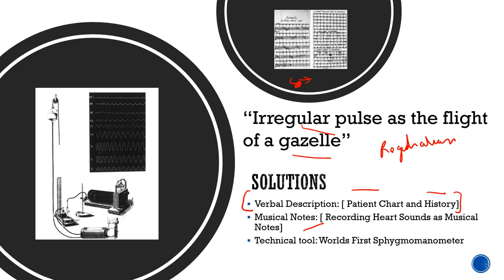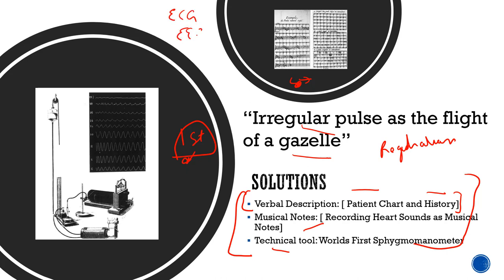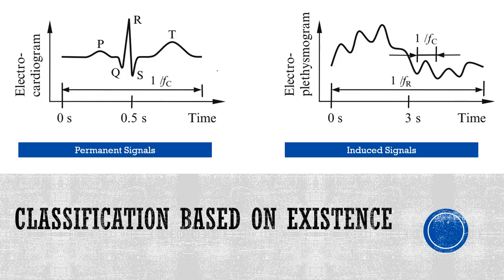These problems also led to the development of technical tools — on the left side you can see the world's first sphygmomanometer. Because we faced those problems, we were able to develop these solutions. We now call them biosignals — ECG, EEG, EMG — those are the biosignals which were formalized once we learned how to register biosignals.